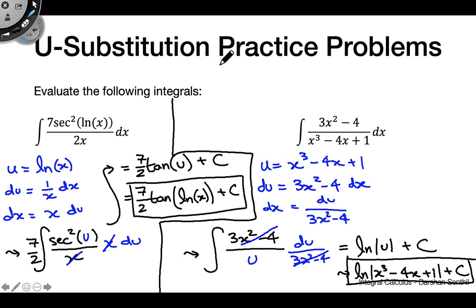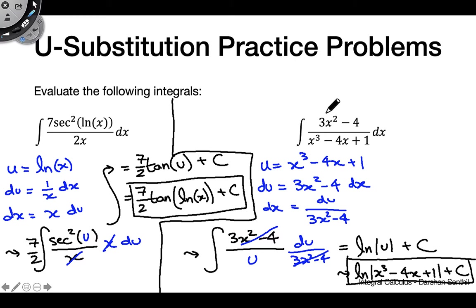The theme of these two problems is to visualize how solving for du and dx helps you make cancellations. The substitution itself might not look like it does much, but when you actually solve for dx you get really nice cancellations. This thought process also helps you eliminate incorrect substitutions — for example, choosing u equals 3x squared minus 4 would not cancel anything out.